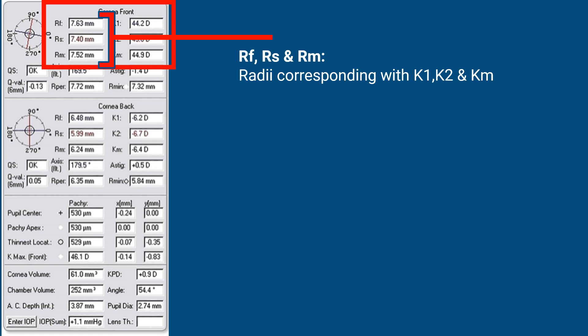There are also values RF, RS, and RM on the left-hand side. These are the radii corresponding with K1, K2, and Km respectively. We normally don't need them; we usually use K1, K2, and Km in the optic form.